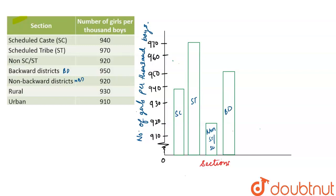And now let's make for non-backward districts, it's 920. So this will be for non-backward districts. And here for rural it is 930, so 930 will be here. This is for rural. And for urban it is 910. This is 910 and it is for urban. So this is the representation of our bar graph.